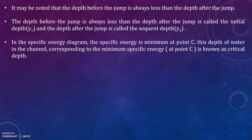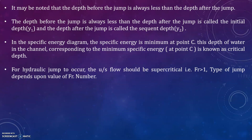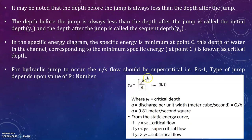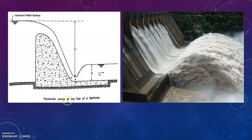In the specific energy diagram, the specific energy is minimum at point C. The depth of water in the channel corresponding to the minimum specific energy at point C is known as critical depth. For a hydraulic jump to occur, the upstream flow should be supercritical, that is Froude number Fr greater than one. The type of jump depends upon the value of Froude number. Critical depth yc equals (q² / g)^(1/3), where yc is critical depth, q is discharge per unit width, and g is 9.81 m/s². If y equals yc it is critical flow; if y1 is less than yc it is supercritical flow; if y2 is greater than yc it is subcritical flow.